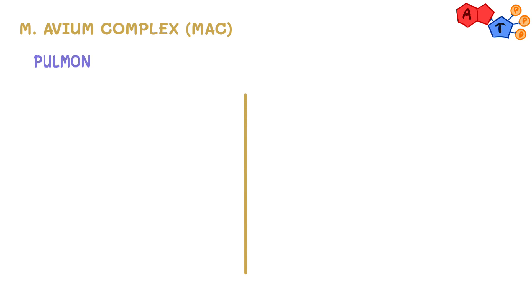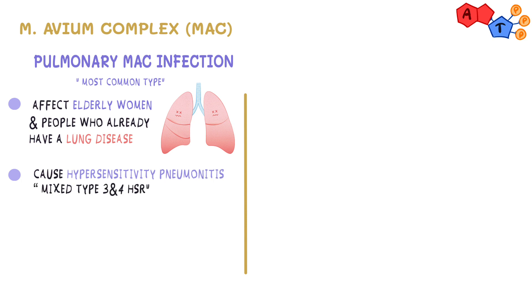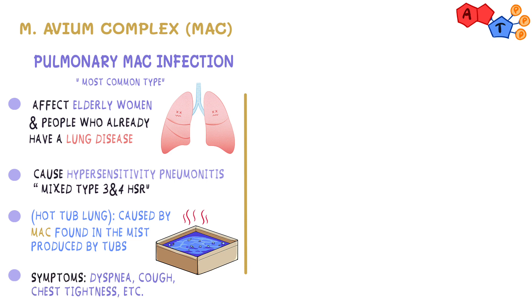There are two types of MAC infections. The first is pulmonary MAC infection, which is the most common type. These mainly affect elderly women and people who already have a lung disease. MAC can also cause hypersensitivity pneumonitis, which is a mixed type III and type IV hypersensitivity reaction to environmental antigens. The disease is commonly called hot tub lung and is caused by MAC found in the mist produced by hot tubs. The pulmonary infection presents with common pulmonary symptoms such as dyspnea, cough, chest tightness, etc.